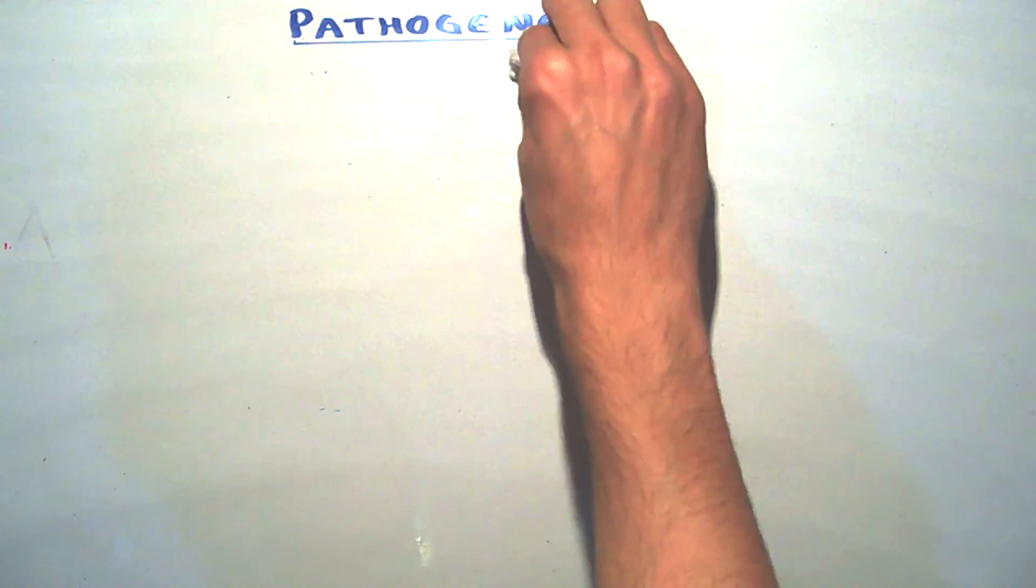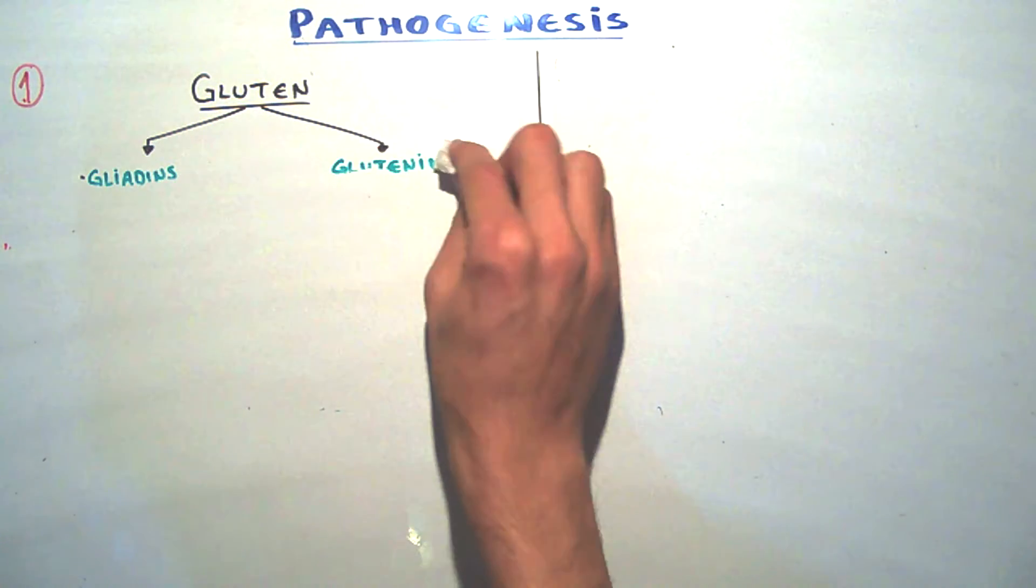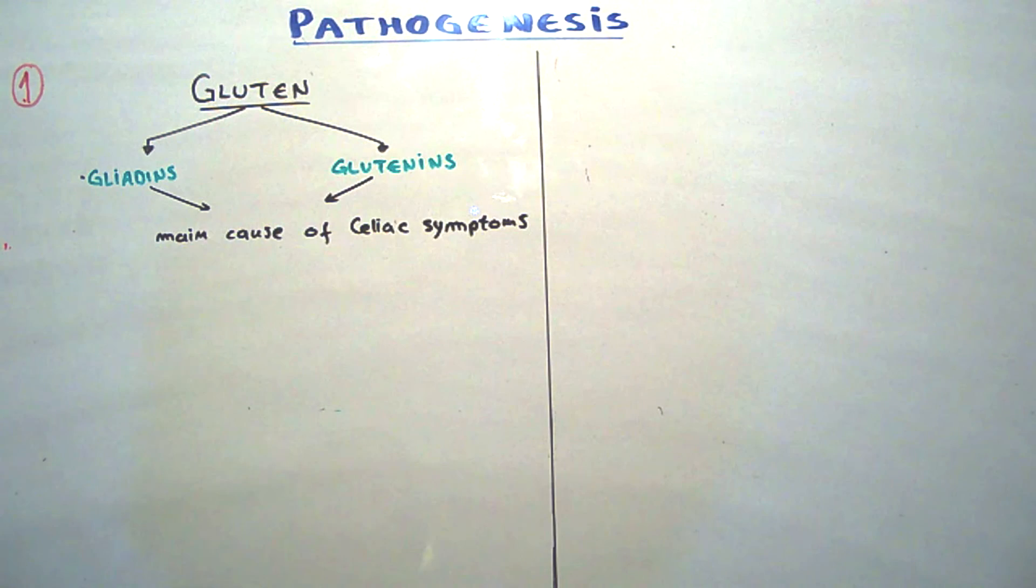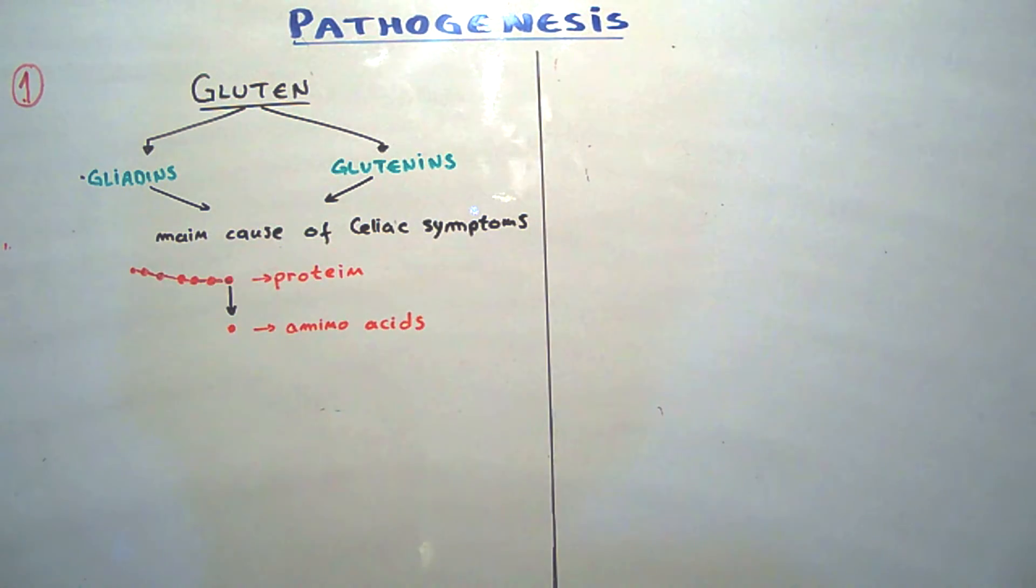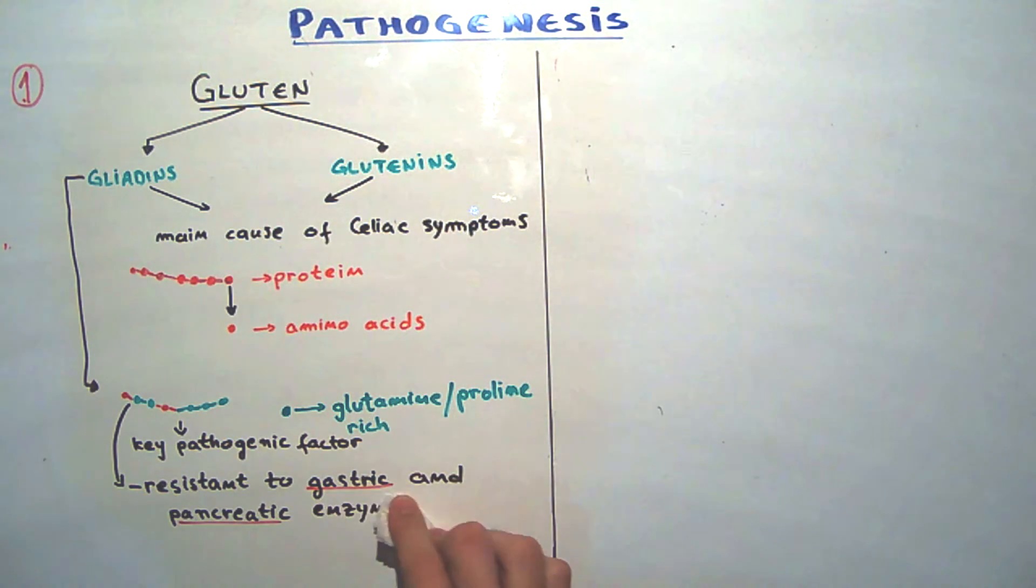Let's move on to the pathogenesis. To fully understand me further, firstly I must explain some things. Gluten contains two major protein fractions, gliadins and glutenins, both of which are the main cause of celiac symptoms. As we know, proteins consist of a chain of amino acids, but what is special about these gluten proteins is that they are very rich with glutamine and proline. This is a key pathogenic factor.